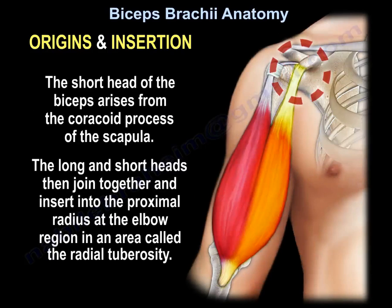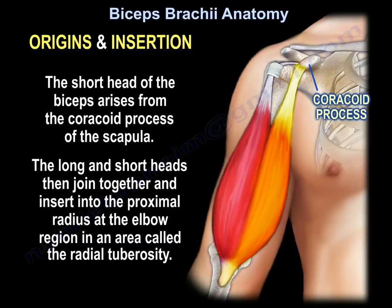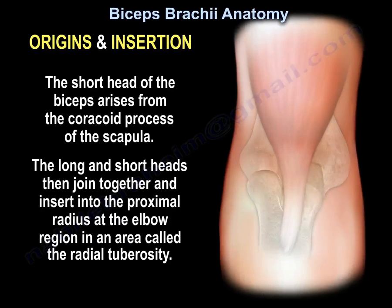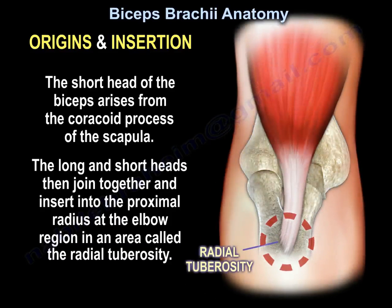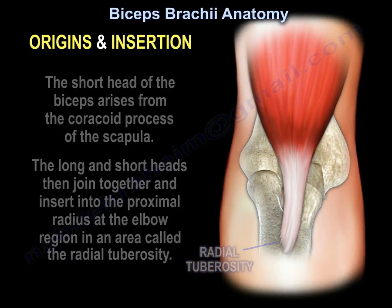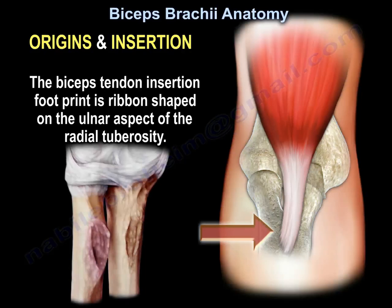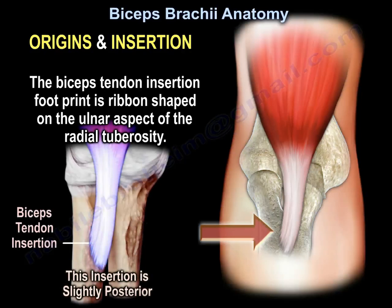The short head of the biceps arises from the coracoid process of the scapula. The long and short heads then join together and insert into the proximal radius at the elbow region in an area called the radial tuberosity.